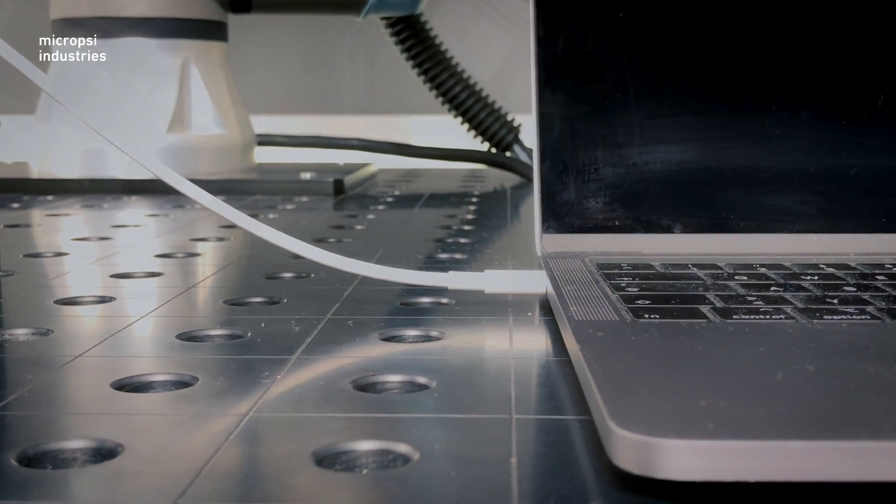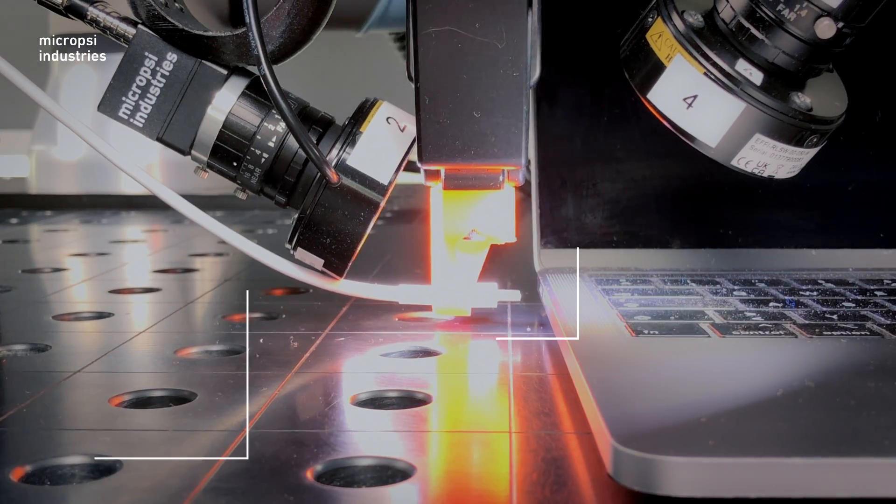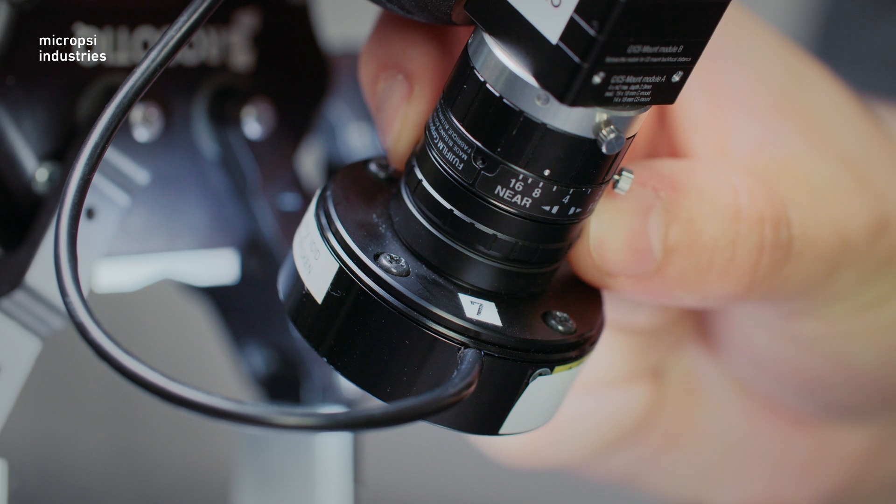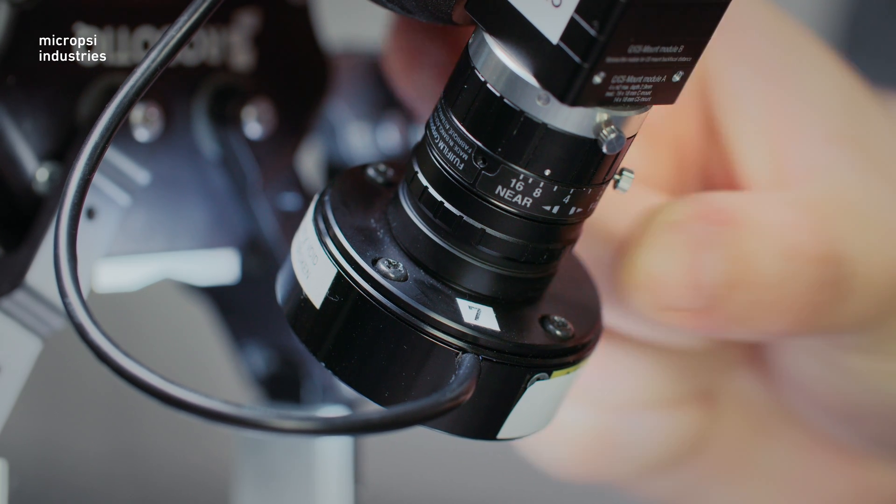Focus is particularly important when you want Mirai to be precise during a task. In those cases, move the robot to the position where you need the greatest precision, then set the focus. You adjust the focus on the camera itself.